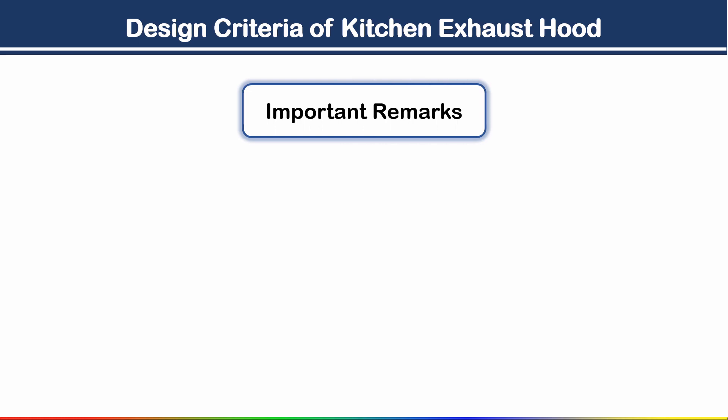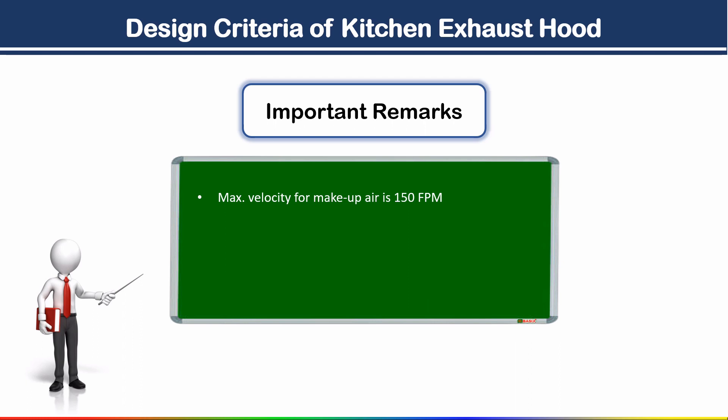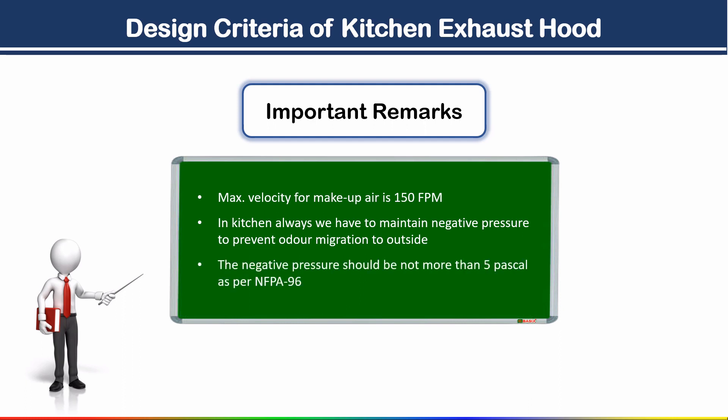Some important remarks: maximum velocity for makeup air is 150 fpm. In a kitchen, we always have to maintain negative pressure to prevent odor migration to the outside. The negative pressure should not be more than 5 Pascals as per NFPA 96.